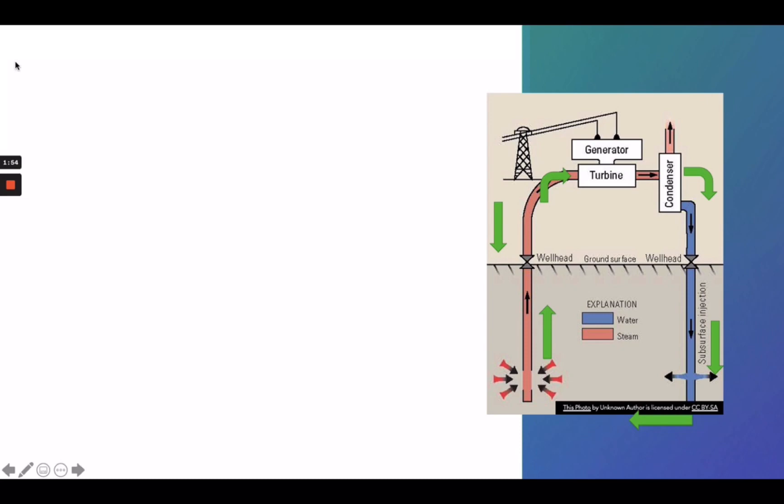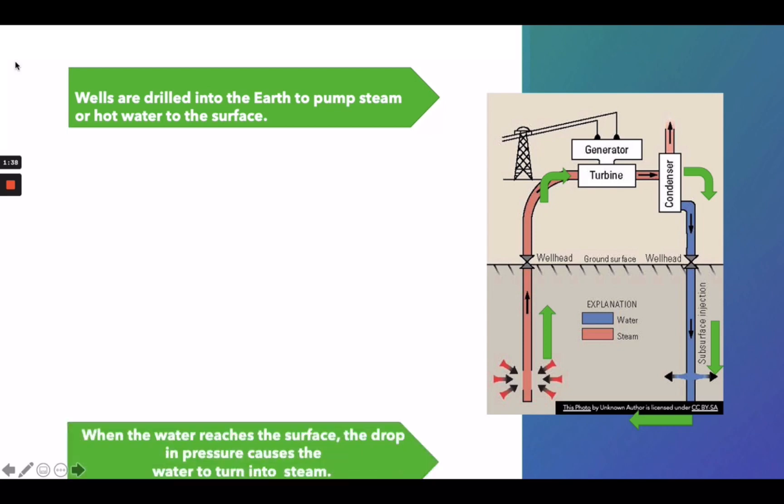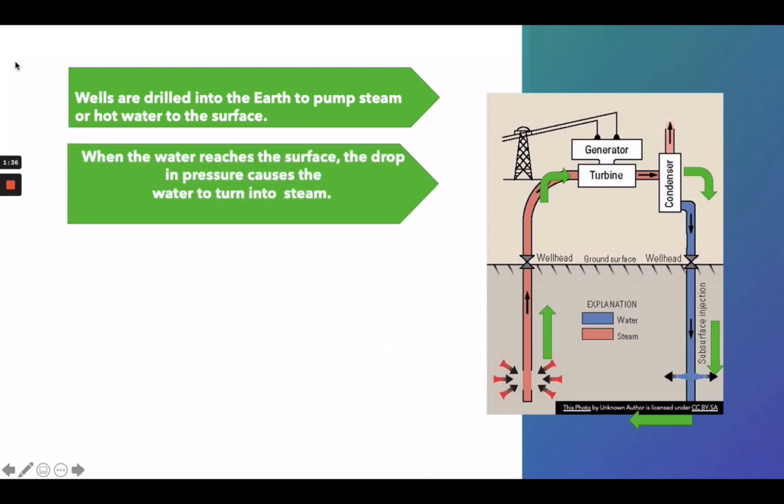Let's take a closer look on the steps on how to generate electricity in geothermal power plants. For the first step, wells are drilled into the Earth to pump steam or hot water to the surface. Second, when the water reaches the surface, the drop in pressure causes the water to turn into steam.